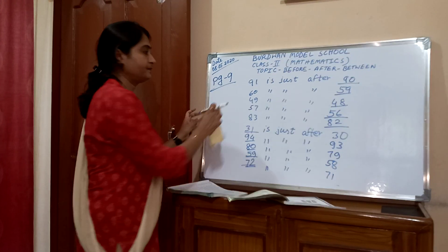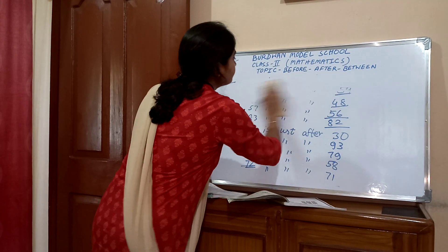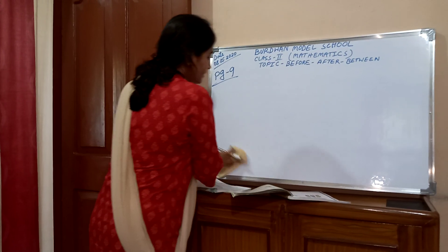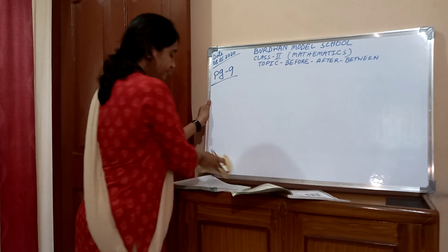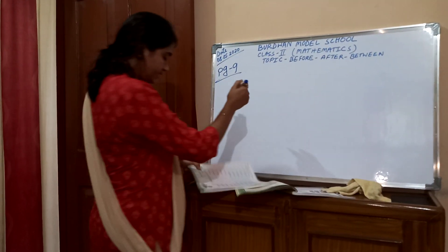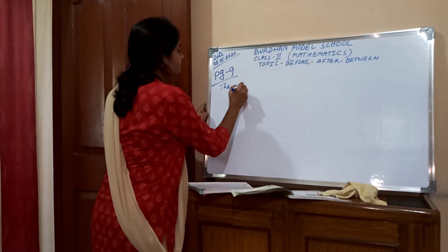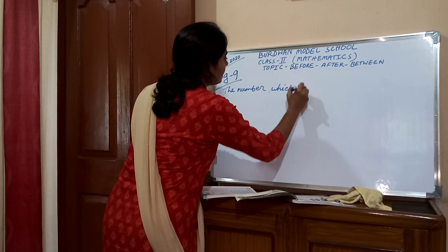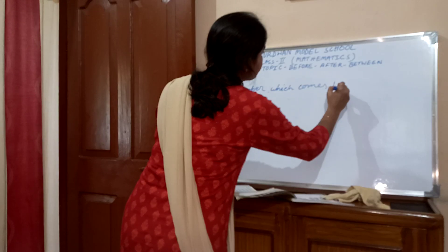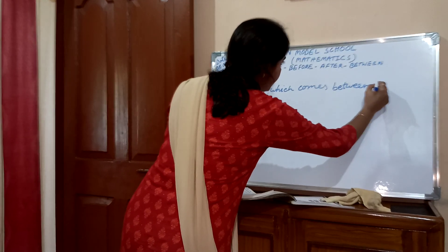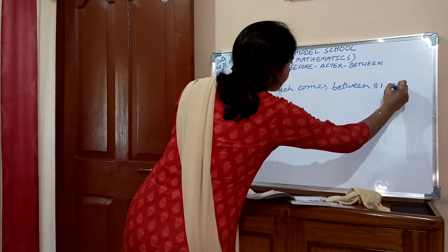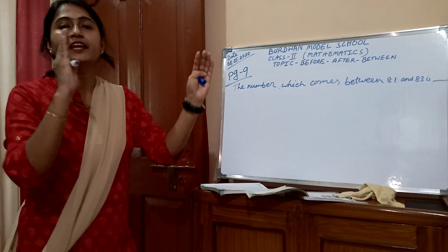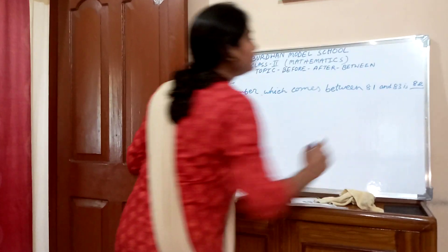Okay, children? This is the way of writing before number and after number. In your exam, I can give it in this way. Now the next part: the number which comes between 81 and 83 is dash. What is the between number of 81 and 83? 81, 82, 83 — so here you write 82.